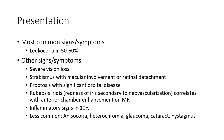Most common signs and symptoms: leukocoria in 50 to 60 percent. Other signs and symptoms include severe vision loss, strabismus, and proptosis. Rubeosis irides — redness of the iris secondary to neovascularization — correlates with anterior chamber enhancement on imaging. Inflammatory signs occur in 10 percent.